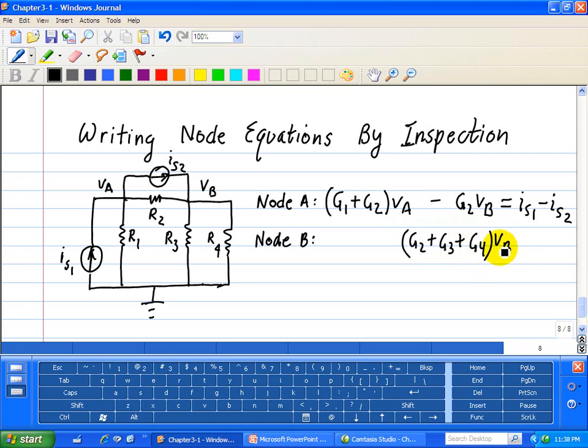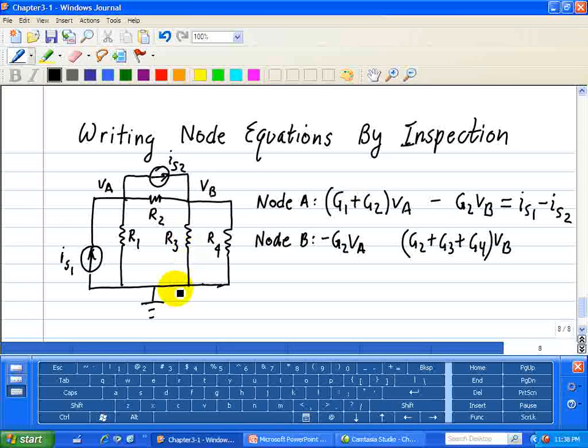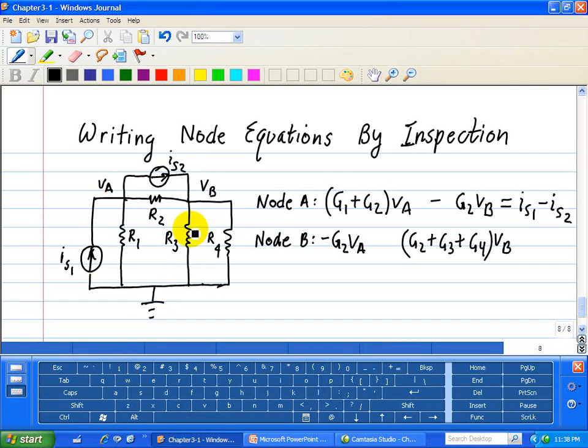And what's connected to the opposite of R2 is VA. So that's just minus G2VA. And what's connected to the opposite of R3 is just our node reference, so we don't have to worry about that. And the opposite of R4 is also connected to our node reference of 0. So that completes the left side of node equation B.